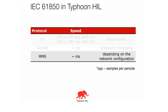At the bottom, we have the MMS protocol. Speed is also measured in milliseconds, but the speed is dependent on the network configuration. If the connection is inside the network or from some other part of the world, it can be even in the second range.